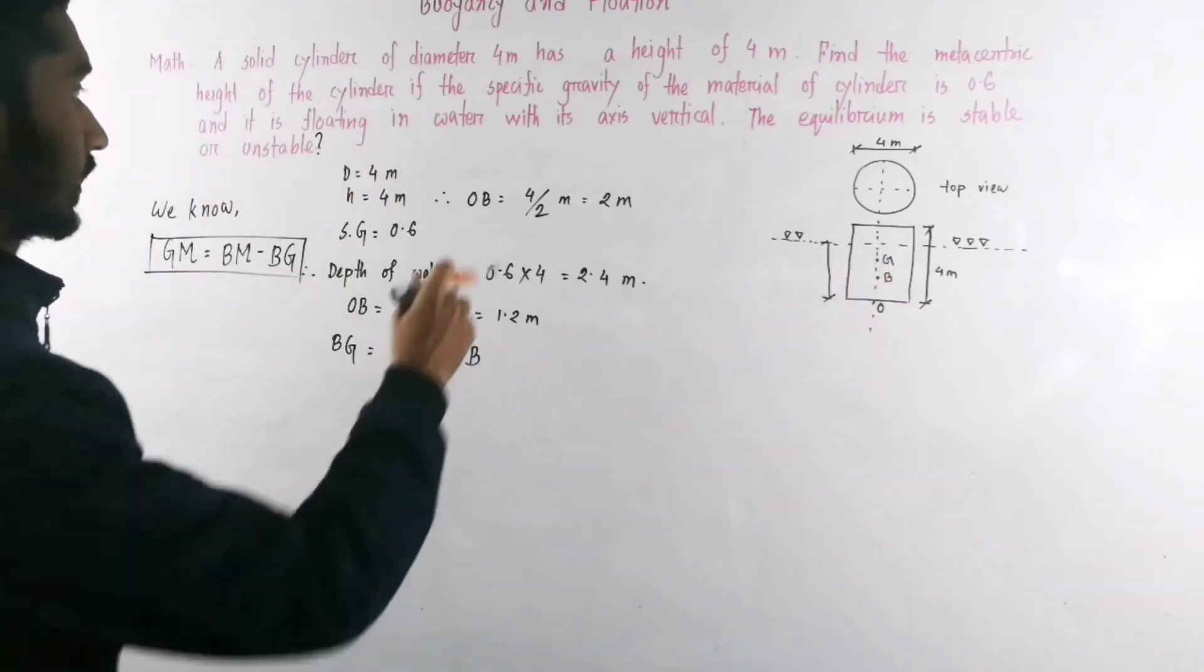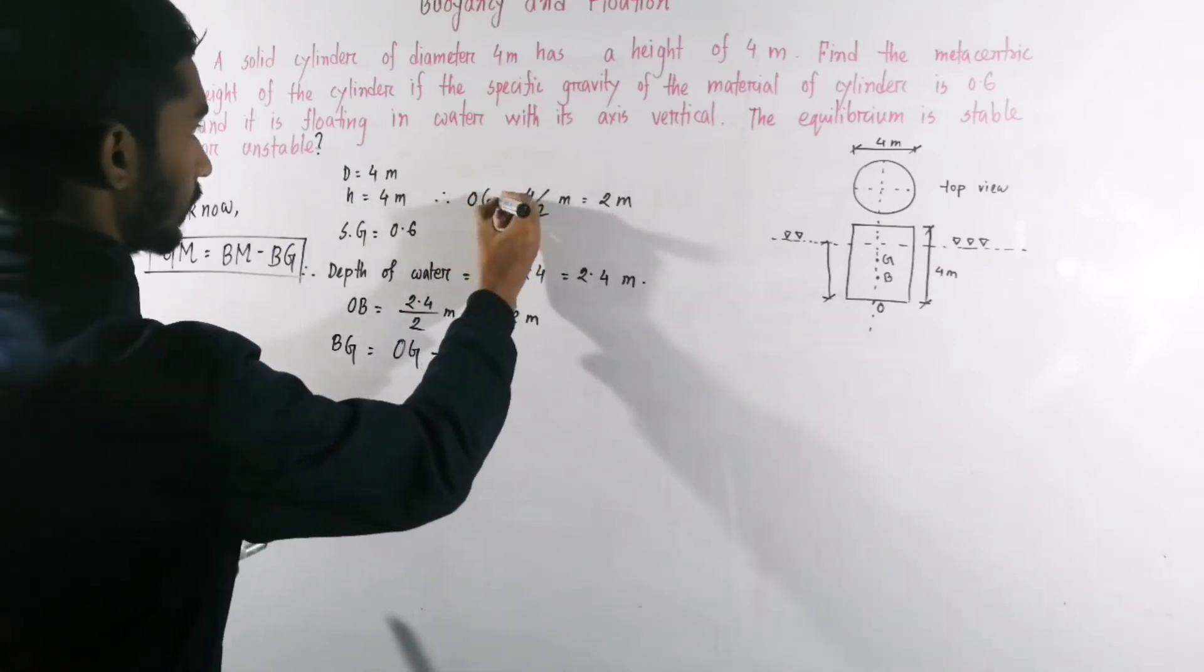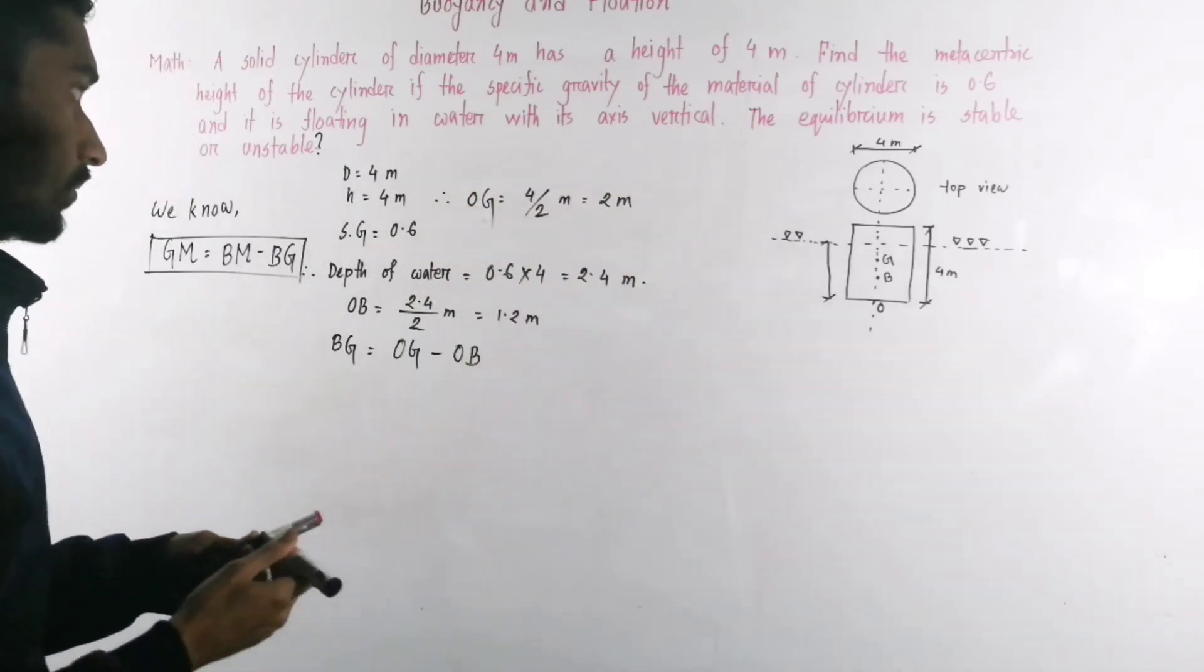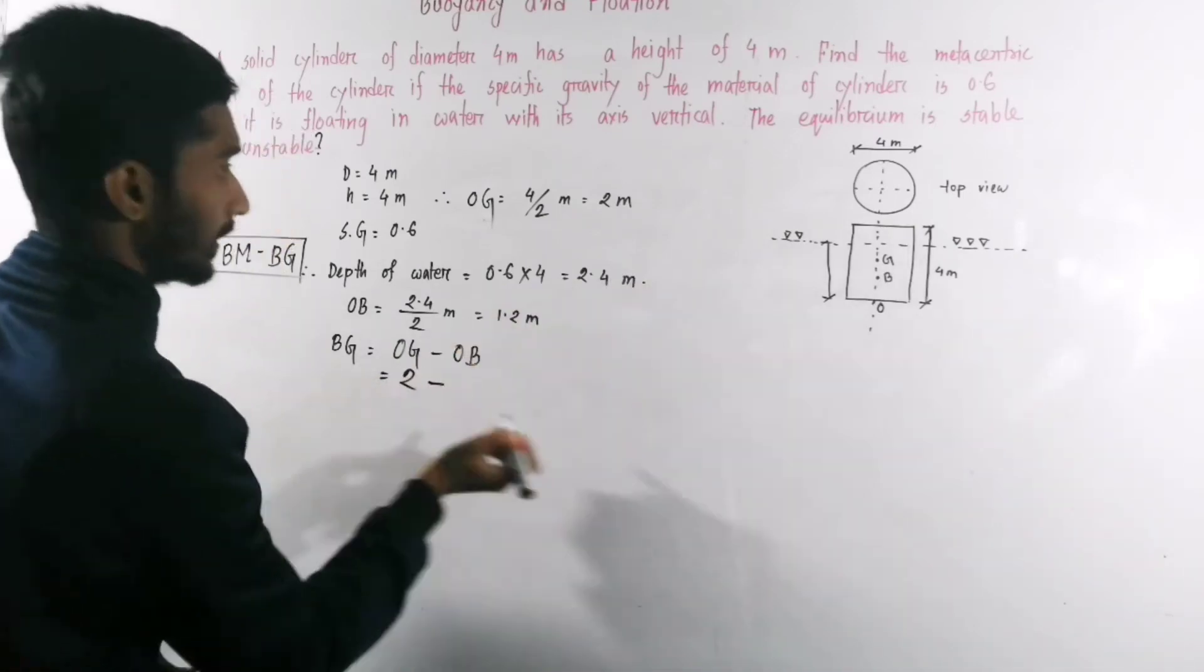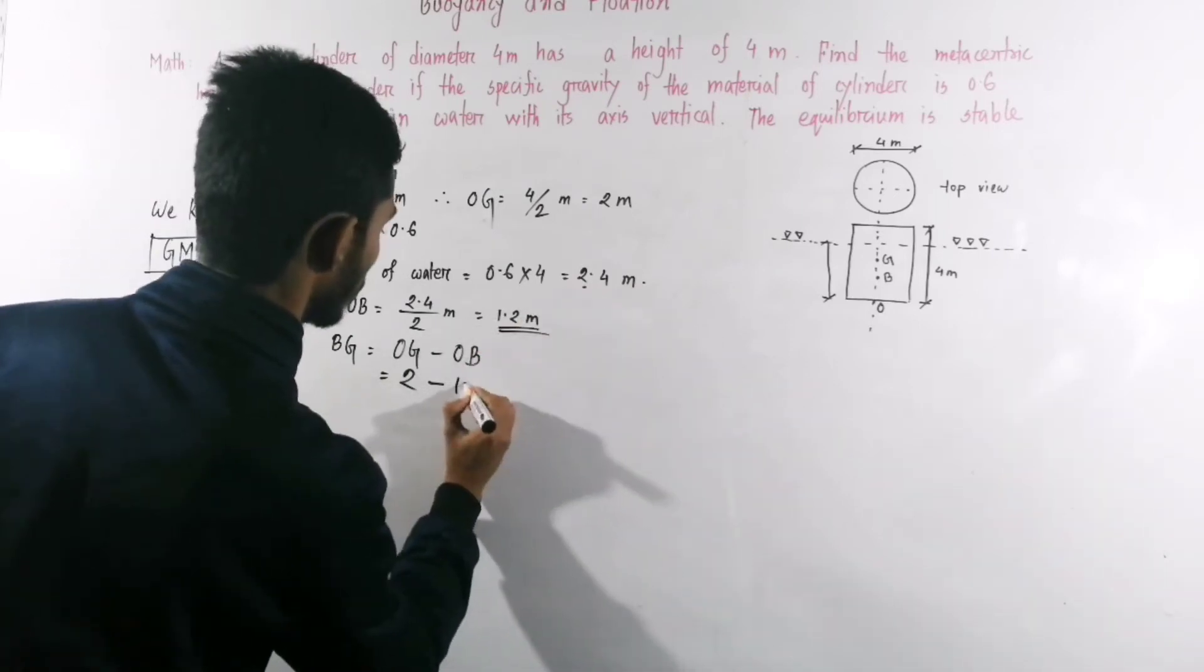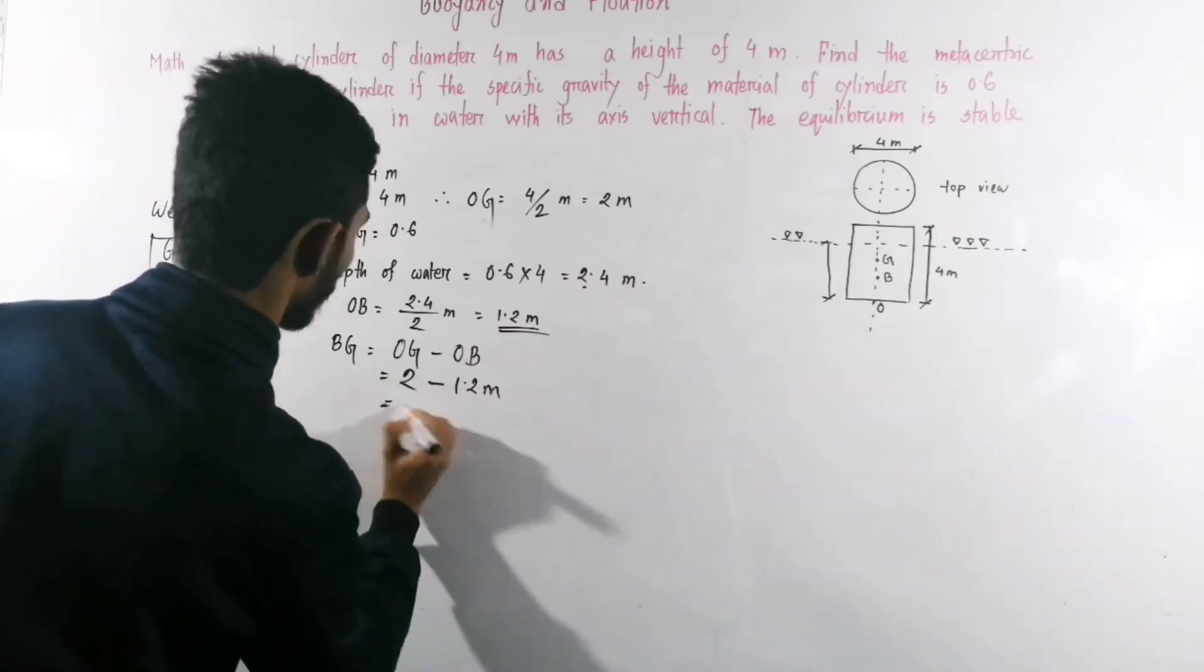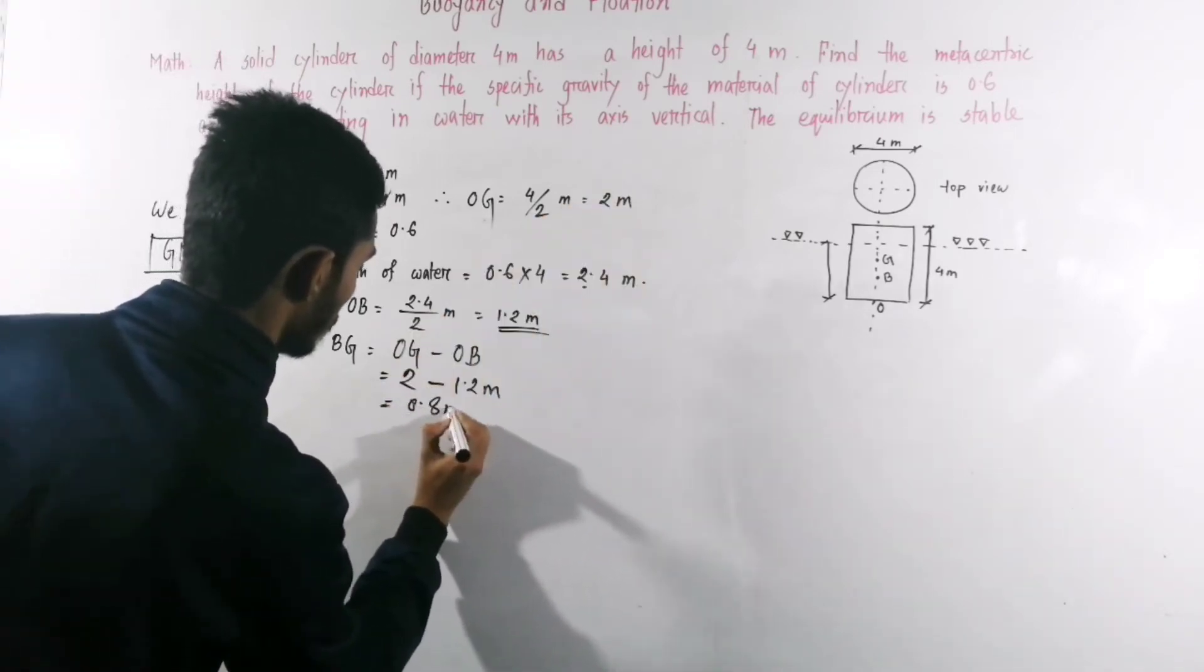I'm at the school section, so OG equal to H/2 equal to 2 meter. Then OG is 2 minus OB which is 1.2 meter, so BG is 0.8 meter.